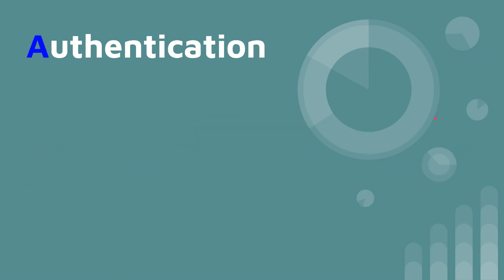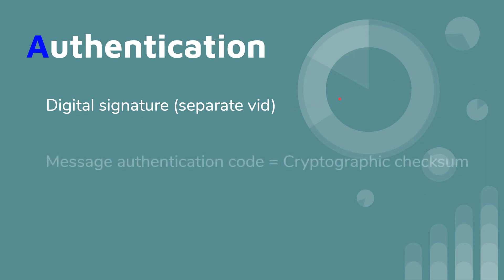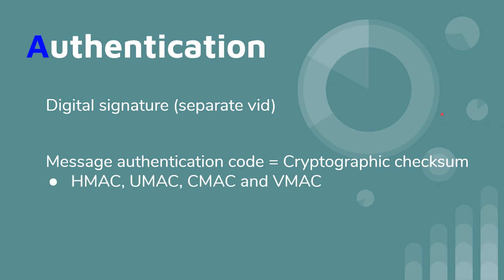Authentication is another service of cryptography. Digital signatures are one way to achieve it — we have a separate video covering that. You can also use message authentication codes, also called cryptographic checksums. Examples include HMAC, UMAC, and CMAC.